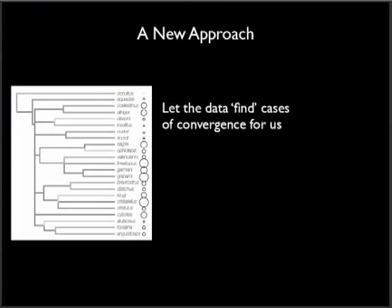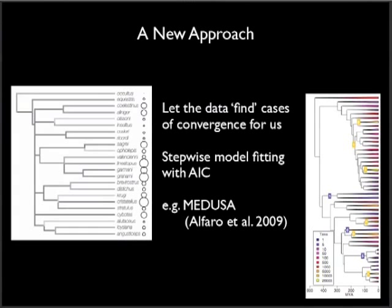The idea behind SURFACE is that we can let the data dictate where regimes are painted onto the tree with the goal of objectively finding cases of convergence. It uses stepwise AIC similar to the method MEDUSA, except that instead of finding shifts in speciation and extinction rates, it looks for shifts between selective regimes.